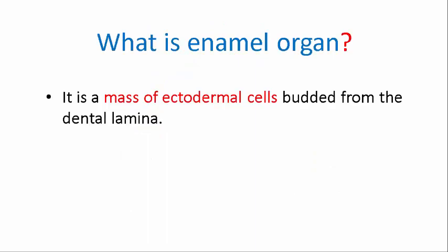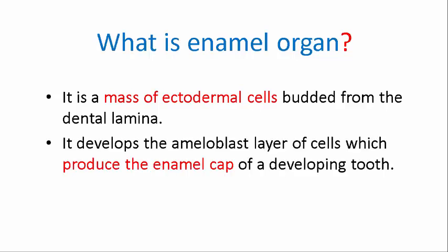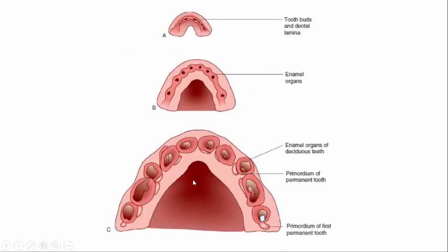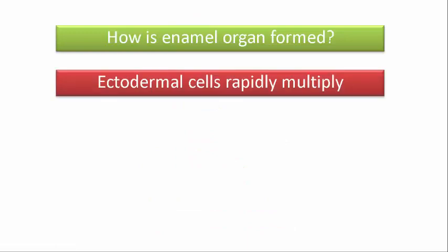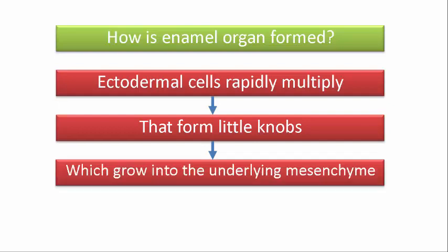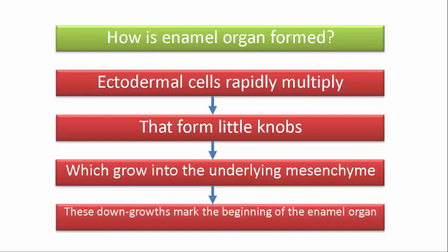Now, what is the enamel organ? It is a mass of ectodermal cells budded from the dental lamina. It develops the ameloblast layer of cells, which produce the enamel cap of a developing tooth. Ectodermal cells rapidly multiply, forming little knobs at the places where deciduous teeth are supposed to form, which grow into the underlying mesenchyme. These downgrowths mark the beginning of the enamel organ.